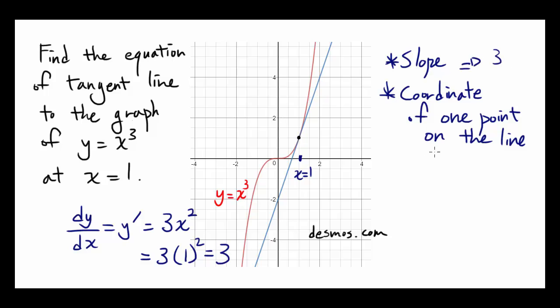How about the coordinate of one point on the line? You know this point has to be on the line, because at x equals 1, the line intersects our graph, it's tangent to it. So what's the coordinate of this point? The x coordinate obviously has to be 1. The y coordinate, you can get it by plugging the x value into y equals x cubed.